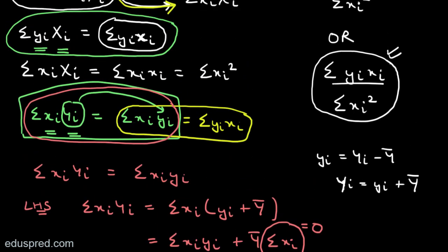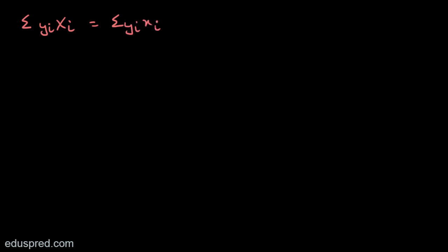Equation number one is something I discussed in an earlier lecture, and now I have also shown equation number two to be true. Combining equations one and two: summation small yi multiplied by capital Xi equals summation small yi multiplied by small xi. By commutativity, this also equals summation small xi multiplied by small yi. And in this lecture I have shown that this equals summation small xi multiplied by capital Yi. So these four expressions are one and the same thing.